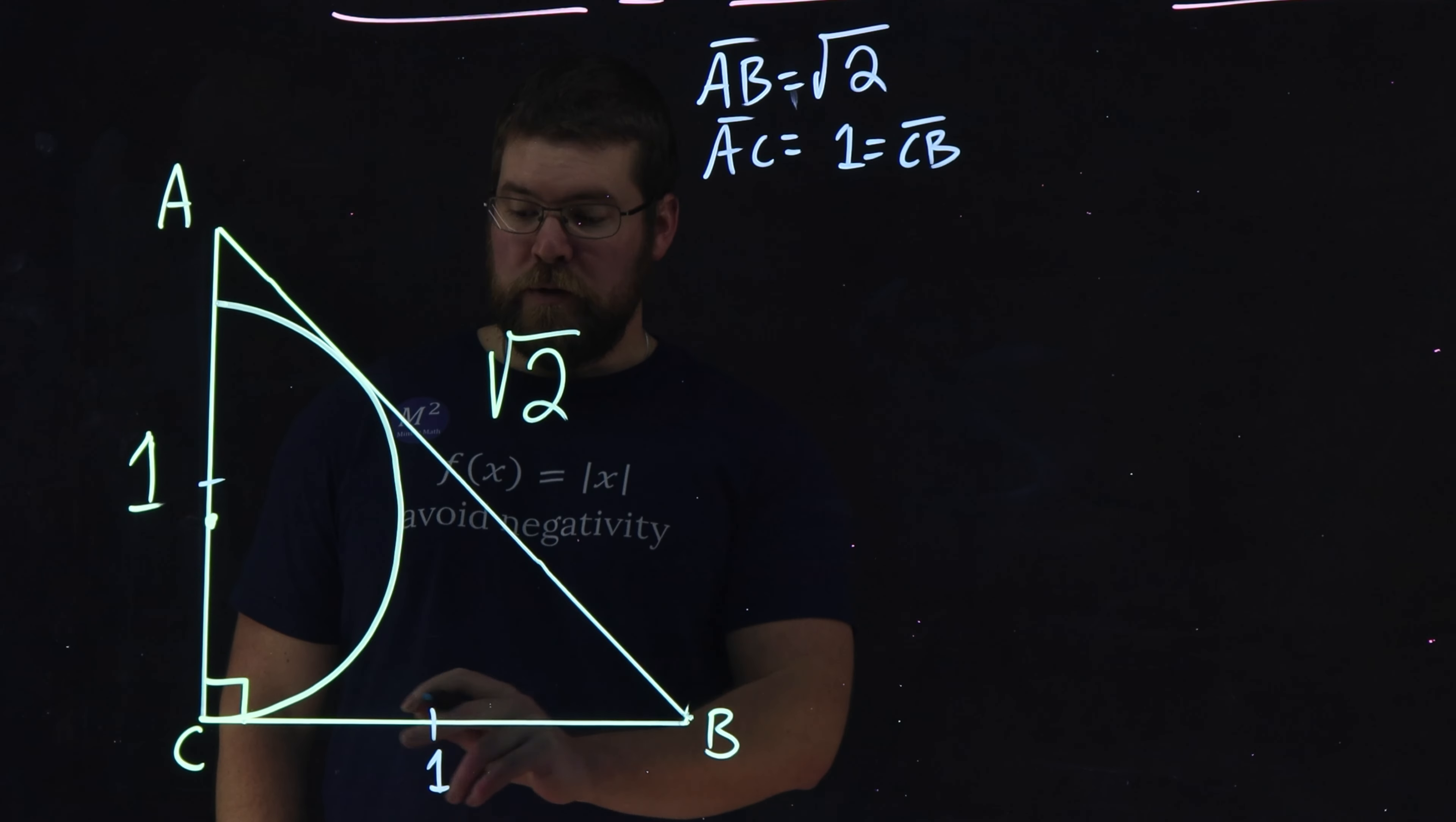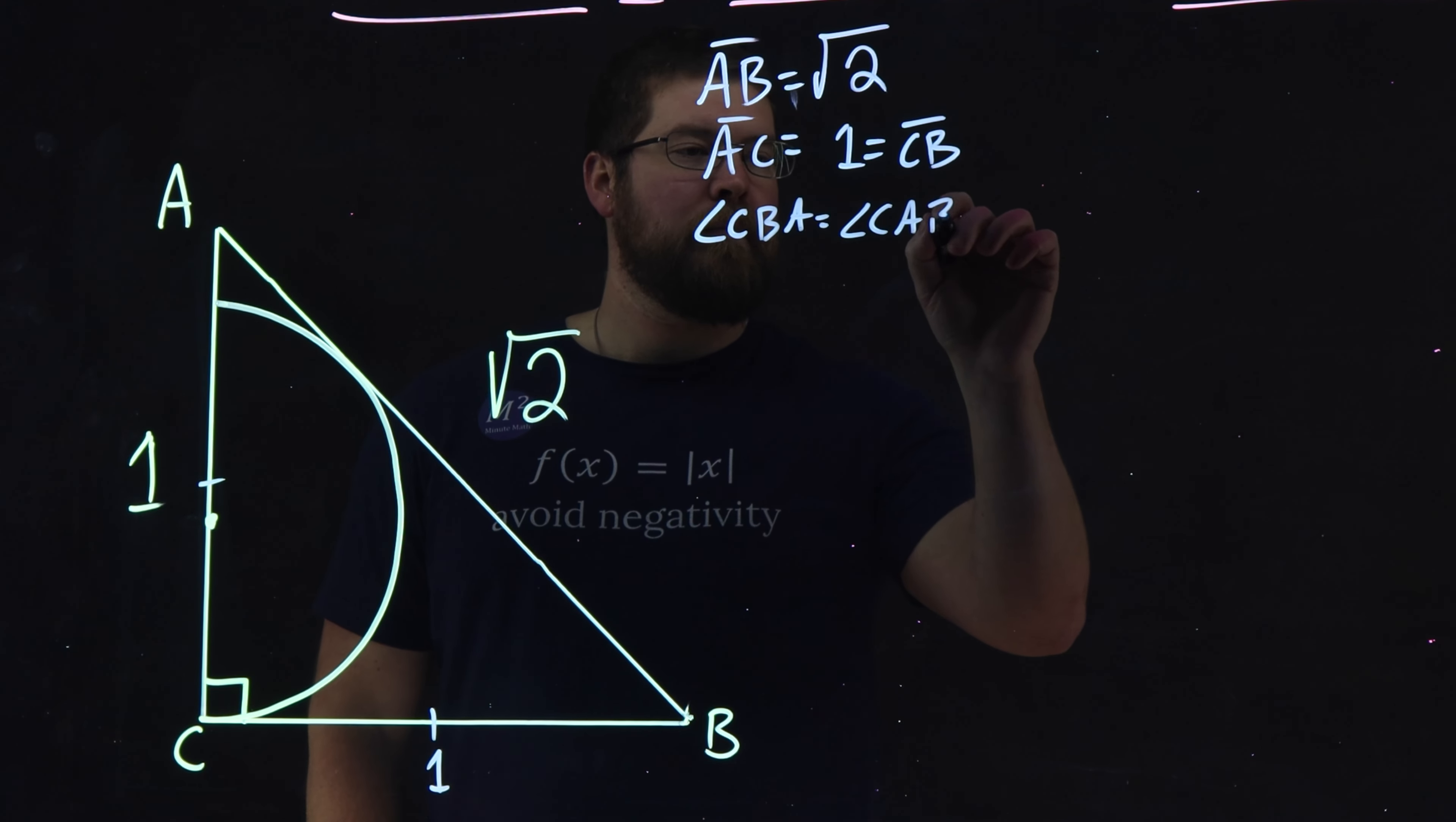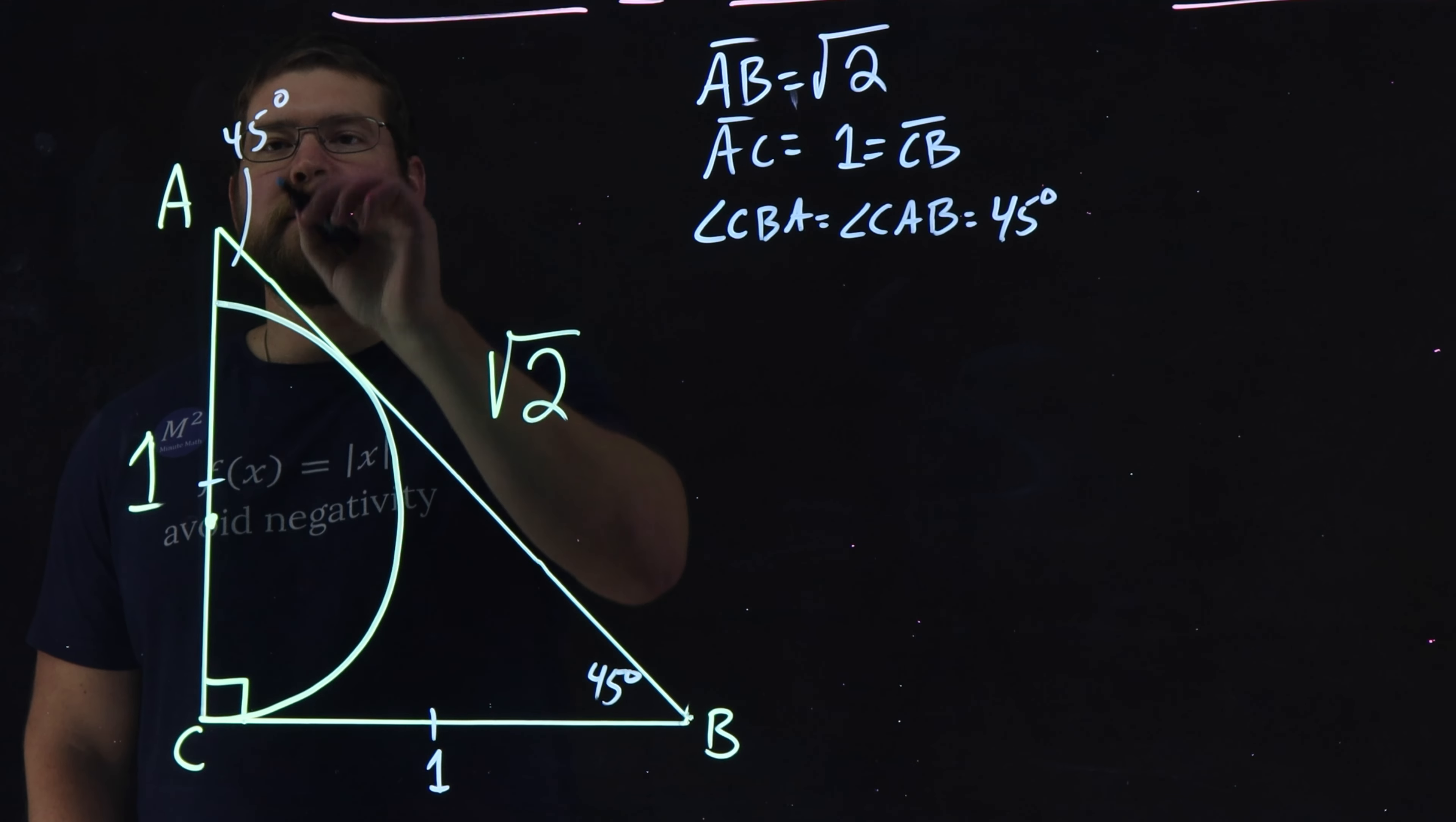Because of that, we know our angles here. Angle CBA is equal to angle CAB, and they're both equal to 45 degrees. So we can put that down here, 45 degrees right there.